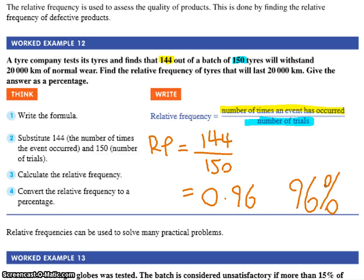So it has a 96% good rate, a 96% success if you will, which means only 4% of their tires fail. Everyone happy with that?